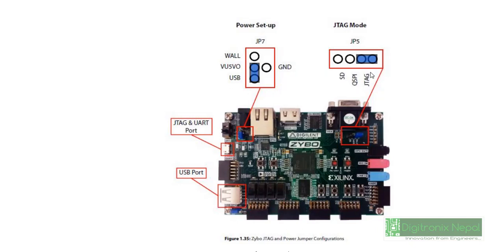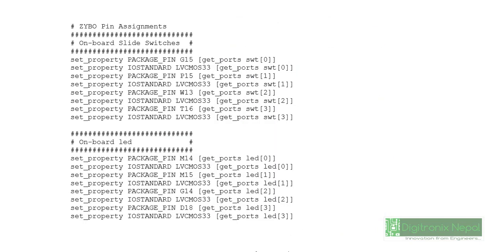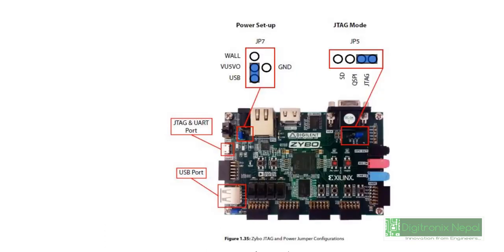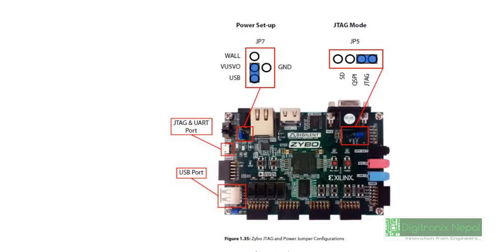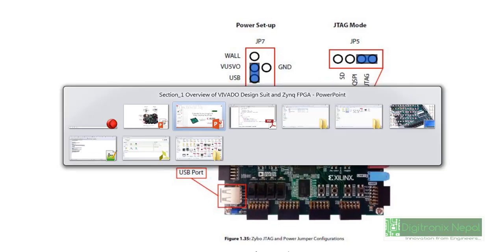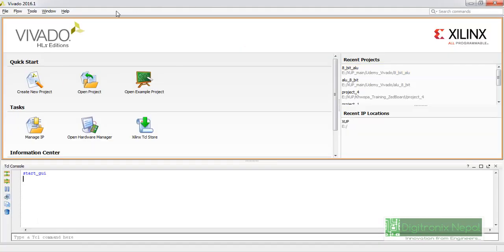This jumper setting is targeted for bitstream uploading as well as SDK project uploading, but we are not uploading any SDK project currently — just an HDL project — so you can select QSPI mode for simplicity. We will show a demonstration later so it will be more clear. Let's go to Vivado to implement the current project, creating and implementing it in Vivado.